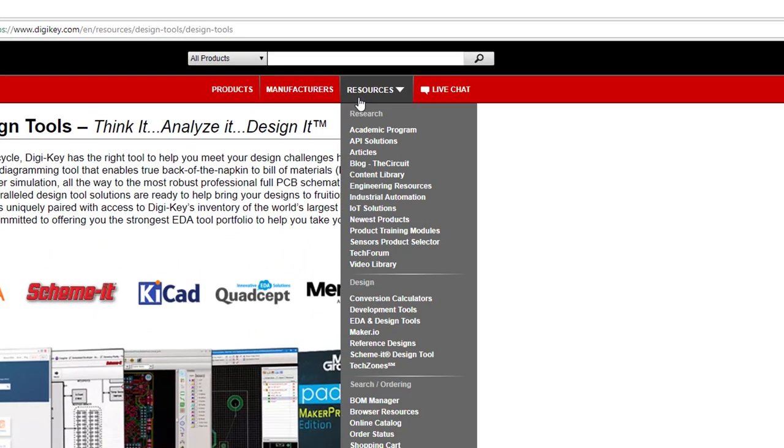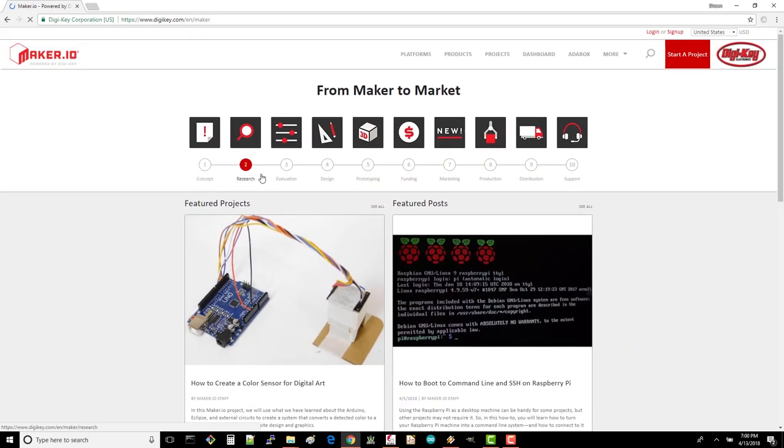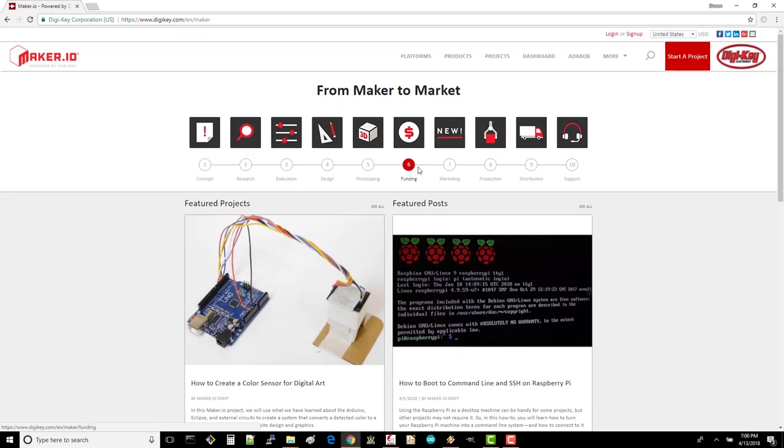If you're thinking about moving to production for your device, head to the Maker.io page on DigiKey. This will give you some good materials and suggestions for taking the next steps to sell your product.